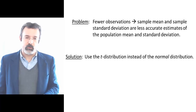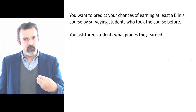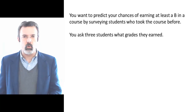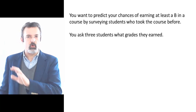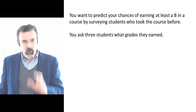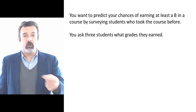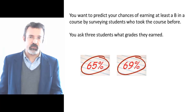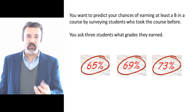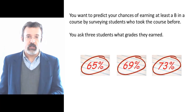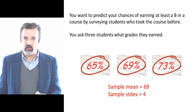The T distribution attempts to compensate for the inaccuracies that arise due to a small number of observations. For example, suppose you want to predict the probability of earning at least a B in a course. You find three students who took this course before and ask them what grades they received. The three students earned a 65%, a 69%, and a 73%. You now have a sample of three observations — the sample mean is 69 and the sample standard deviation is 4.